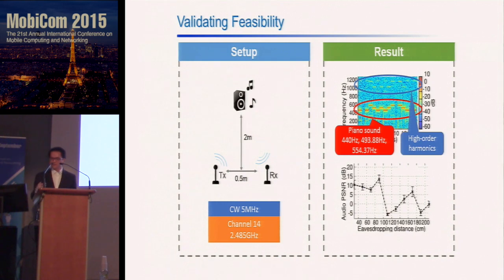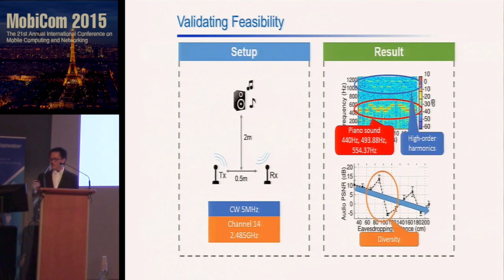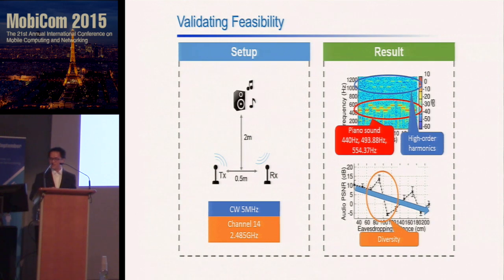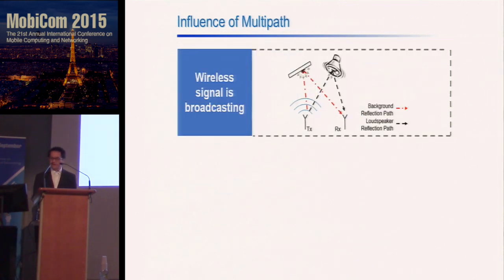We also tested the audio quality over increasing eavesdropping distance. The overall trend is decreasing, but we observe some abnormal deviations at some locations. We believe this comes from multipath diversity, which implies we can enhance audio quality by leveraging this diversity. To do so, we first need to figure out where it comes from. From our analysis, we find it comes from the multipath effect — the wireless signal is broadcast, so there are reflections not only from the loudspeaker but also from nearby objects.